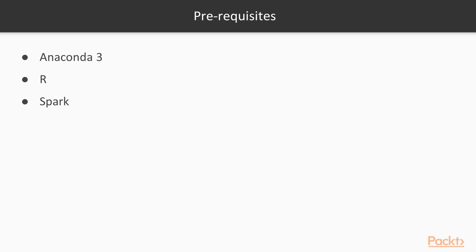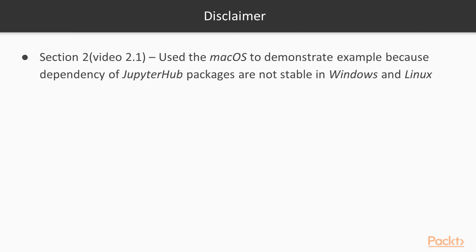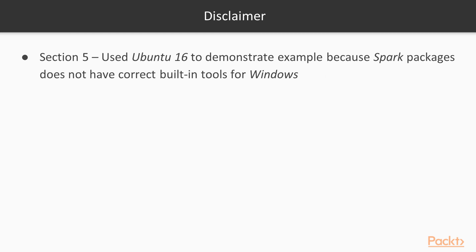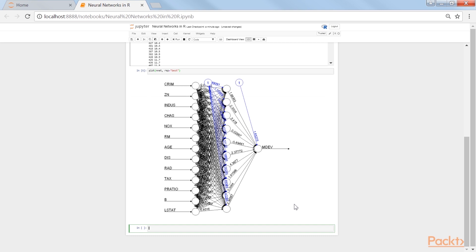These would be the prerequisites of the course. We're using Mac OS to demonstrate an example because the dependency of JupyterHub packages are not stable in Windows and Linux. We are using Ubuntu 16 to demonstrate an example because the Spark packages do not have the correct built-in tools for Windows. This course takes you through a number of practical solutions covering a wide range of topics you need to know about Jupyter for Data Science.